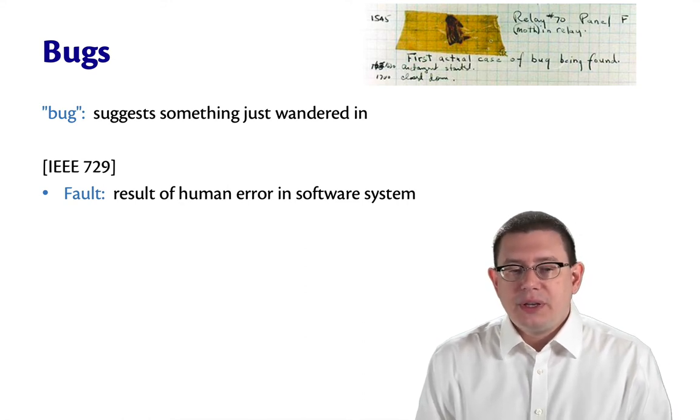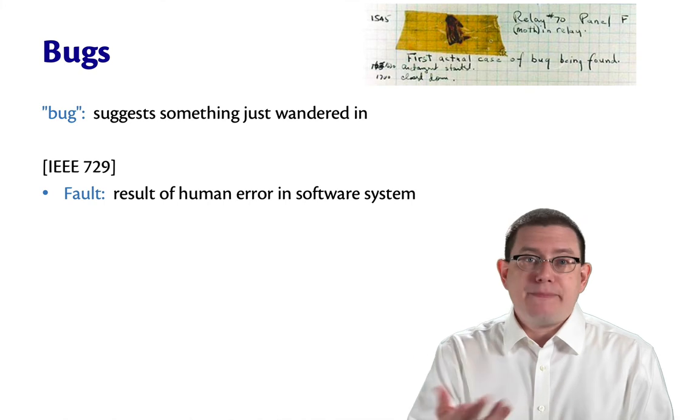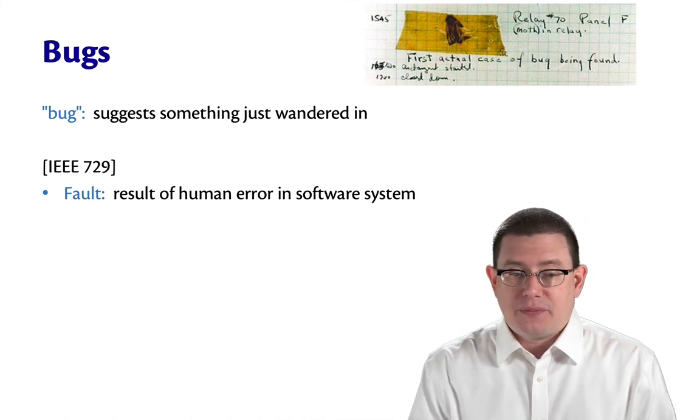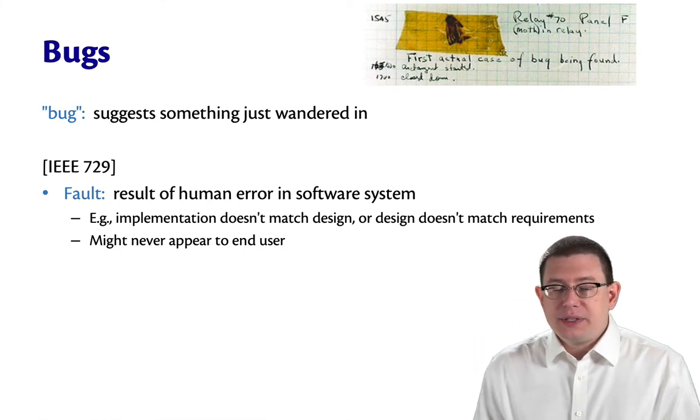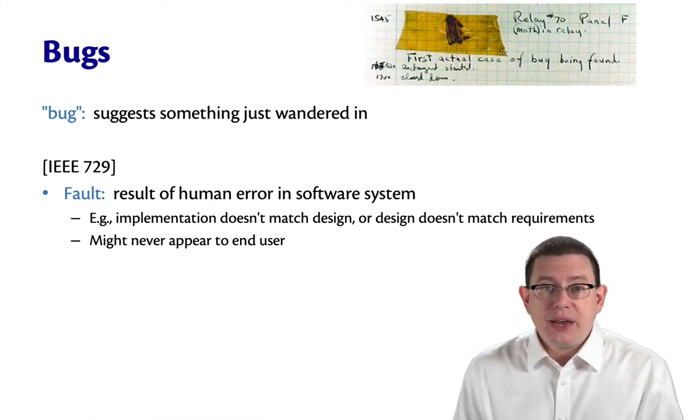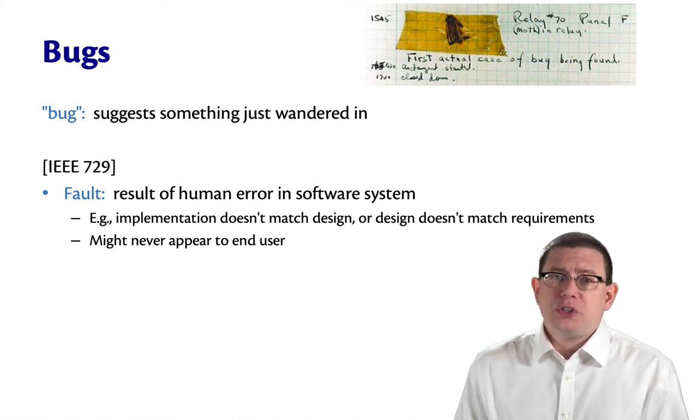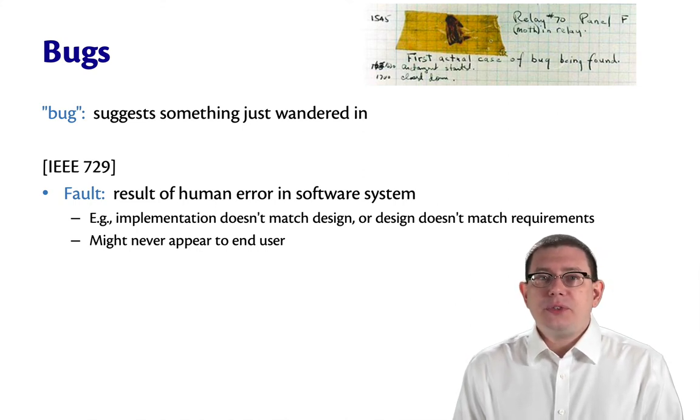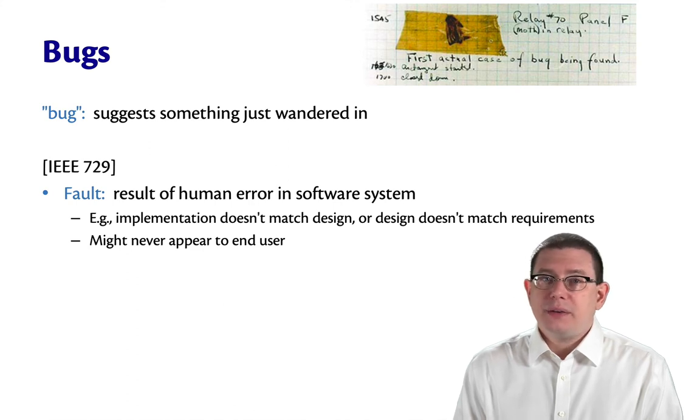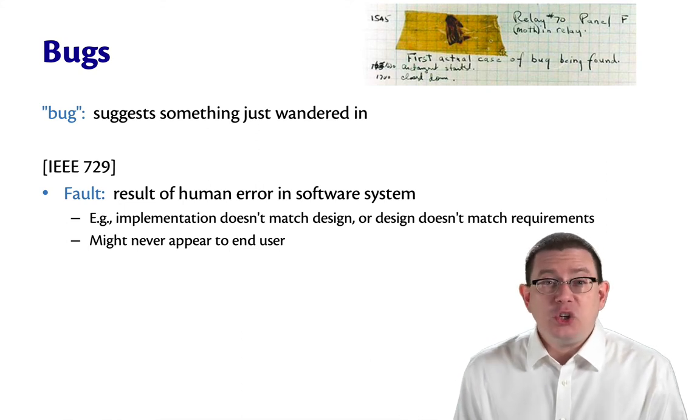A fault is the result of human error in software. Maybe the most common kind of error is you or I make a coding mistake. Other ways those errors could occur: maybe you implement something that doesn't match the design for the software system, or maybe the design doesn't match the requirements that human users had. In any case, faults might make themselves visible or not. They might remain latent and hidden. They might never appear to an end user.